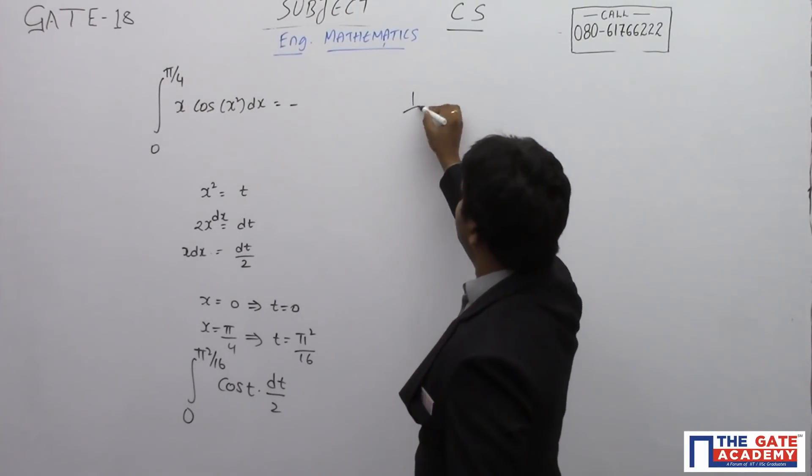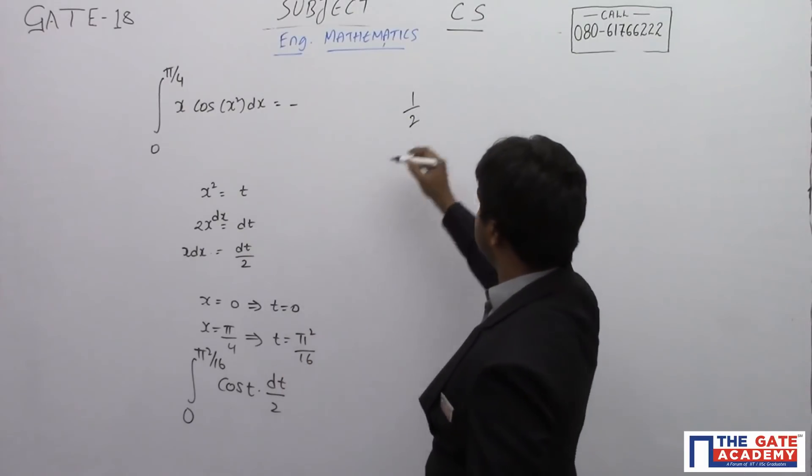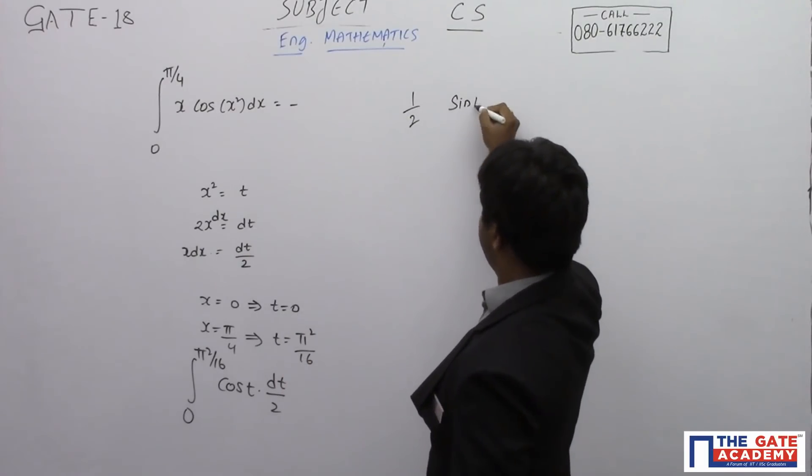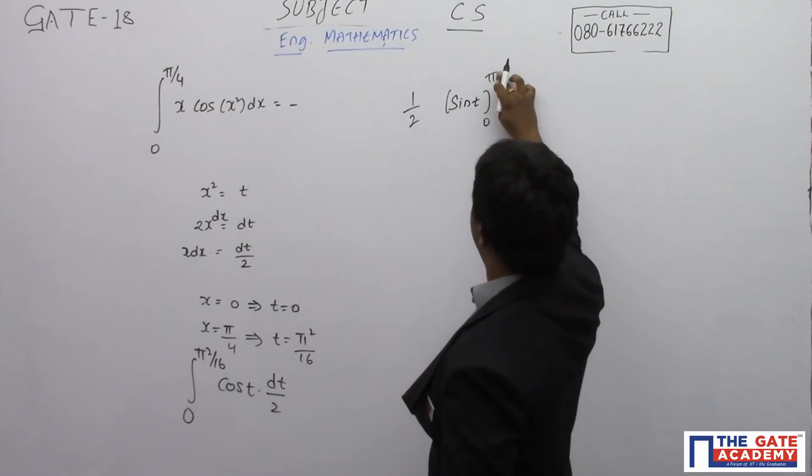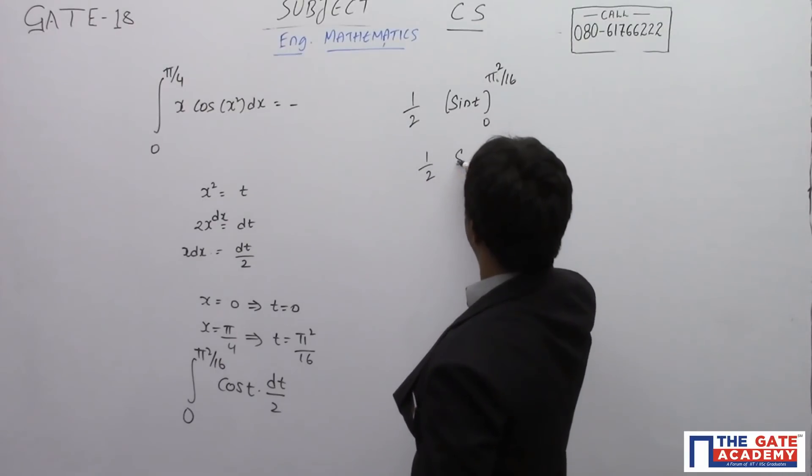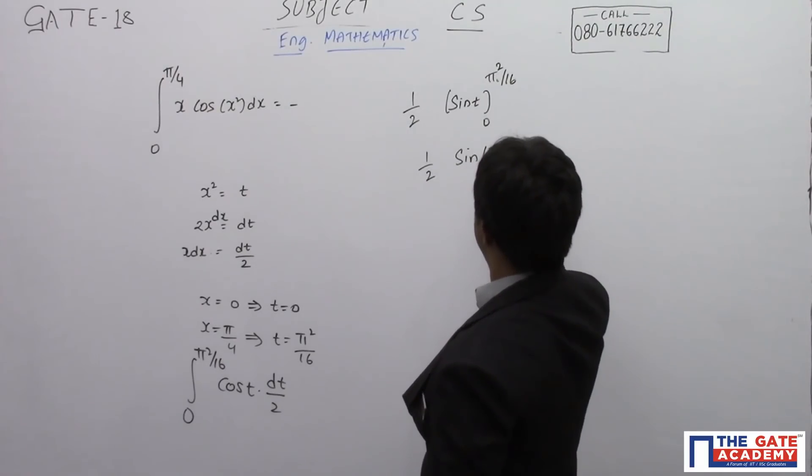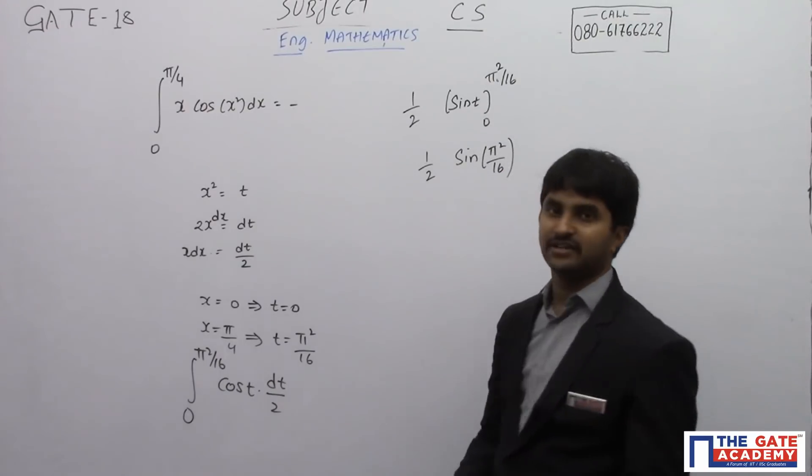So 1 by 2 comes outside, so integral of cos t is nothing but sine t, evaluated from 0 to pi square by 16. So 1 by 2 sin of pi square by 16. Please calculate the value.